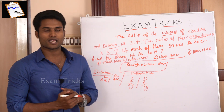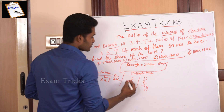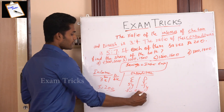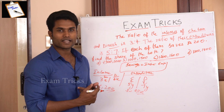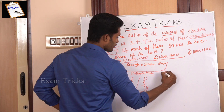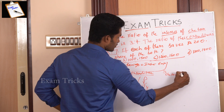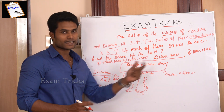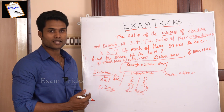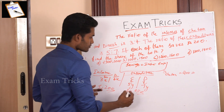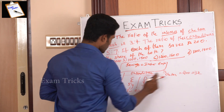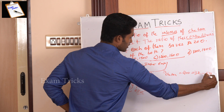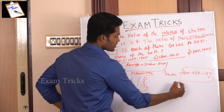Each person saves 200. Using the savings formula — income minus expenditure — the savings of Chetan equals 3x minus 5y, and this equals 200. This is equation number one.